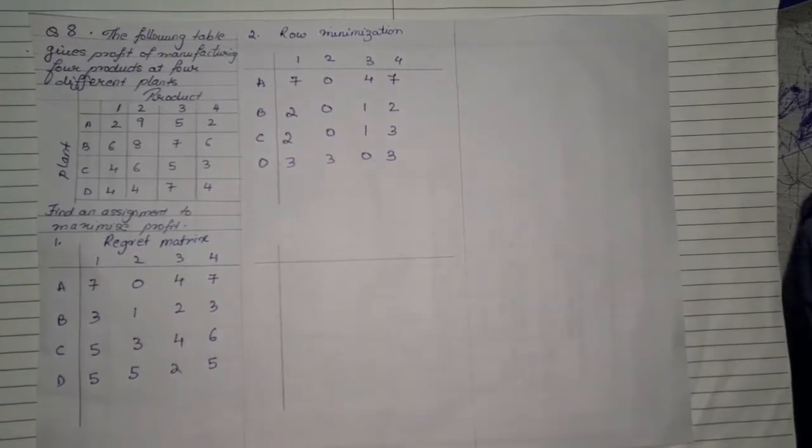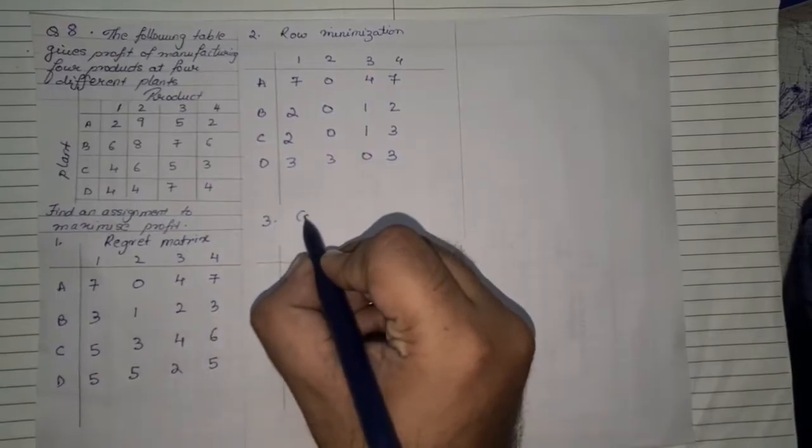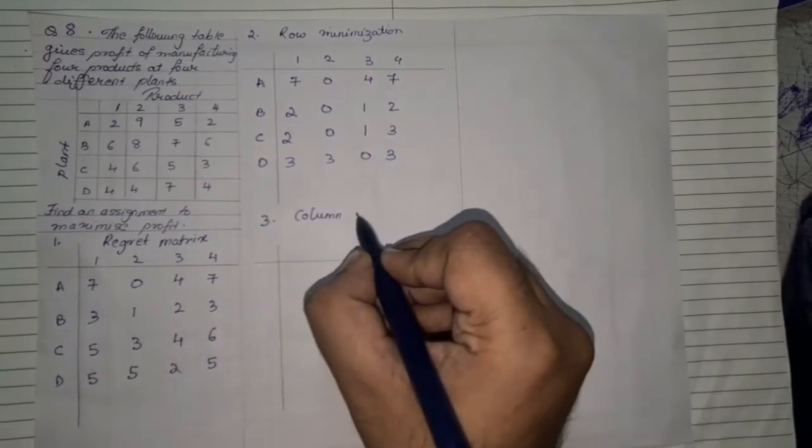Okay, now next value is the lowest value in the last row is two so it will be two minus one so it will give you three three zero and again three. So that is how we have to first create row minimization. After creating row minimization our next step is column minimization.